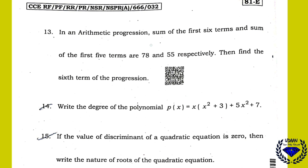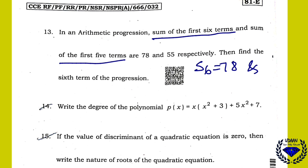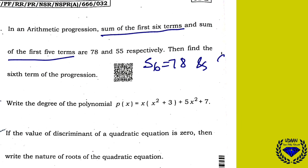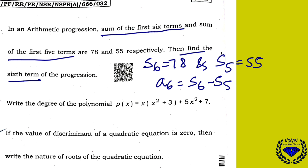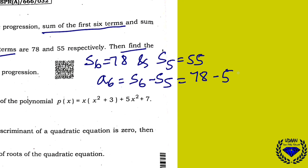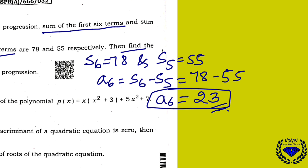In an AP, the sum of the first 6 terms is 78 and the sum of the first 5 terms is 55. Find the 6th term. a6 = S6 − S5 = 78 − 55 = 23. So the 6th term is 23.